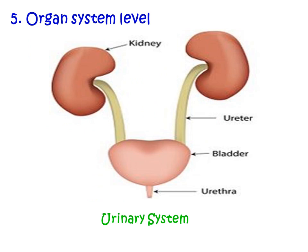The fifth is the organ system level of organization, which is a group of organs functioning together as a unit with a common function or set of functions. For example, the kidneys have the common function of removing waste products from the blood and producing urine, which is transported by ureters to the urinary bladder where it is stored until eliminated through the urethra. We have 11 major organ systems that work together and are necessary for normal functions of our body.